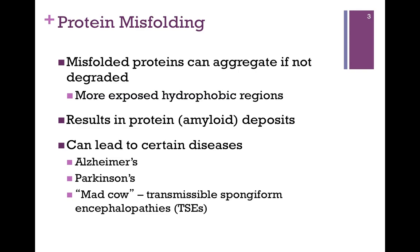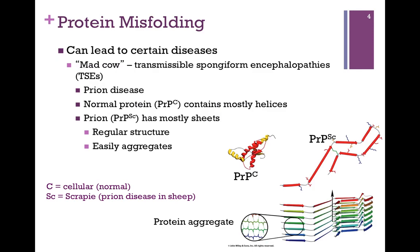The first discovered case was a prion disease found in sheep called scrapie. It is simply a case of a misfolded protein — there is no mutation, it is simply misfolded. In the illustration, PRP stands for prion protein: the superscript 'c' indicates the cellular or normal form, and 'sc' indicates the misfolded or scrapie form. In the normal form the protein is all alpha-helical and somewhat globular, but in the misfolded form it consists of beta strands in a more linear form — again, not a mutation, just a misfold.